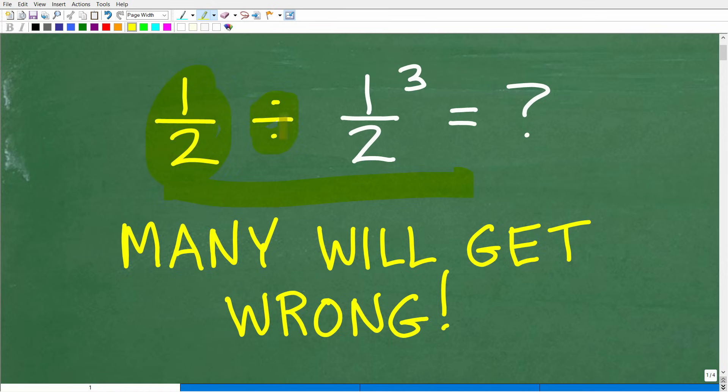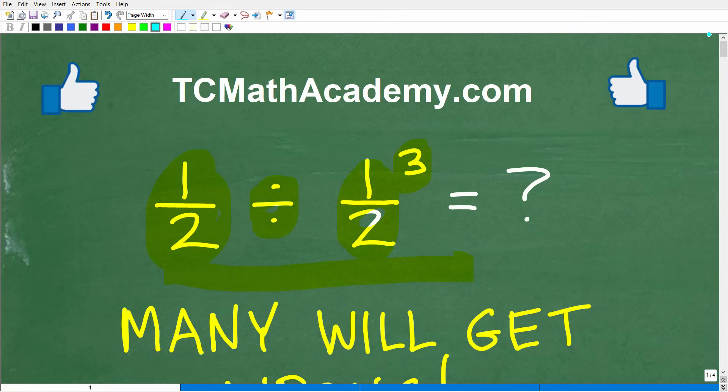We have 1 half divided by 1 half cubed. All right, so if you can figure this out, go ahead and put your answer into the comment section. I'll show you the correct answer in just one second, and then, of course, I'll fully explain the solution to this simple problem step-by-step in just one moment.